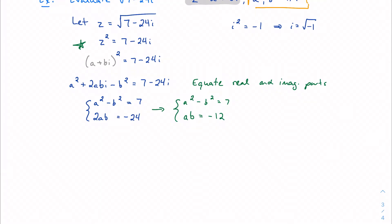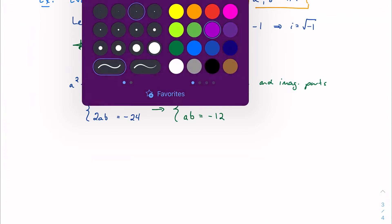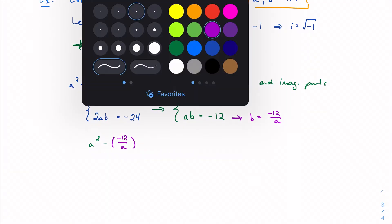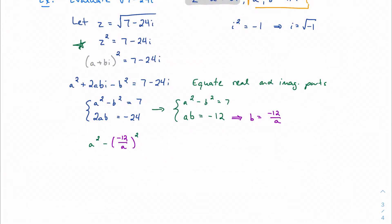The first thing I'm going to want to do is make a substitution. Maybe I'll substitute for b. I'll say b is equal to negative 12 divided by a. And this gives me a substitution that I can put right into my other equation. So I'm going to say that a squared minus (negative 12 over a) squared is equal to 7.